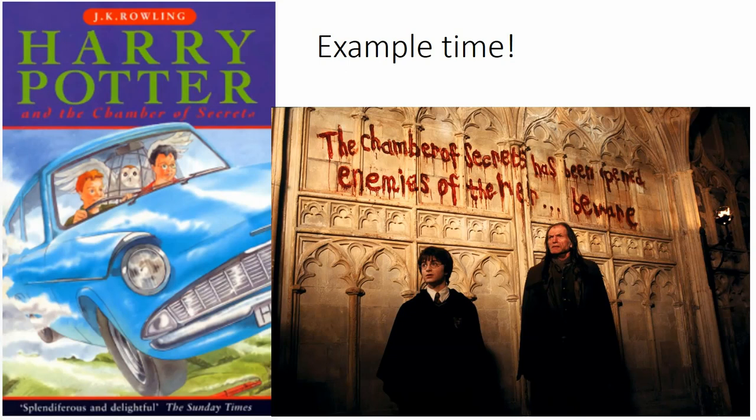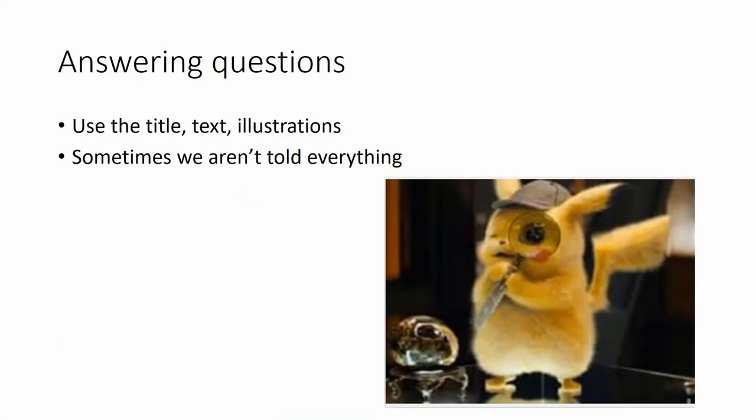Whose is this voice? Where is it coming from? Why can only Harry hear it? How did no one see the attacker? And who could the heir be? As you can see from the example, to answer these questions we use the title, the text, the illustrations — just like we did with our predictions. Now, sometimes you're not told everything. Some questions will be left unanswered by the author. That's where good readers can use their own interpretation of the story to come up with their own answers. This is a little bit like visualisation, in that maybe the explanation you come up with will be different to mine, but they are both equally valid.